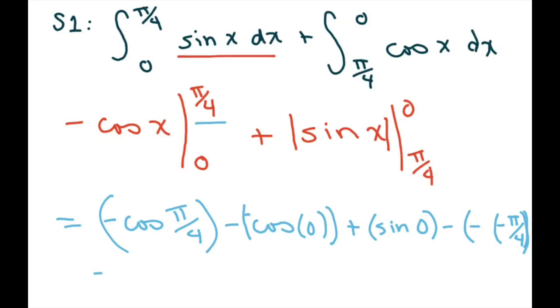Alright and that's going to yield negative one over square root of two plus one, since cosine of zero is just one. Sine of zero is just zero and then this one is going to be plus minus one over square root of two.